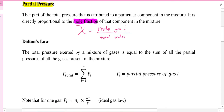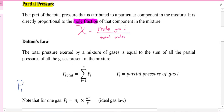So Dalton's Law basically says the total pressure exerted by a mixture of gases is equal to the sum of all the partial pressures of the gases present in the mixture. For example, air - the partial pressure of air would be equal to the pressure of nitrogen gas plus the pressure of oxygen gas, plus the pressure of argon, plus the pressure of everything else.